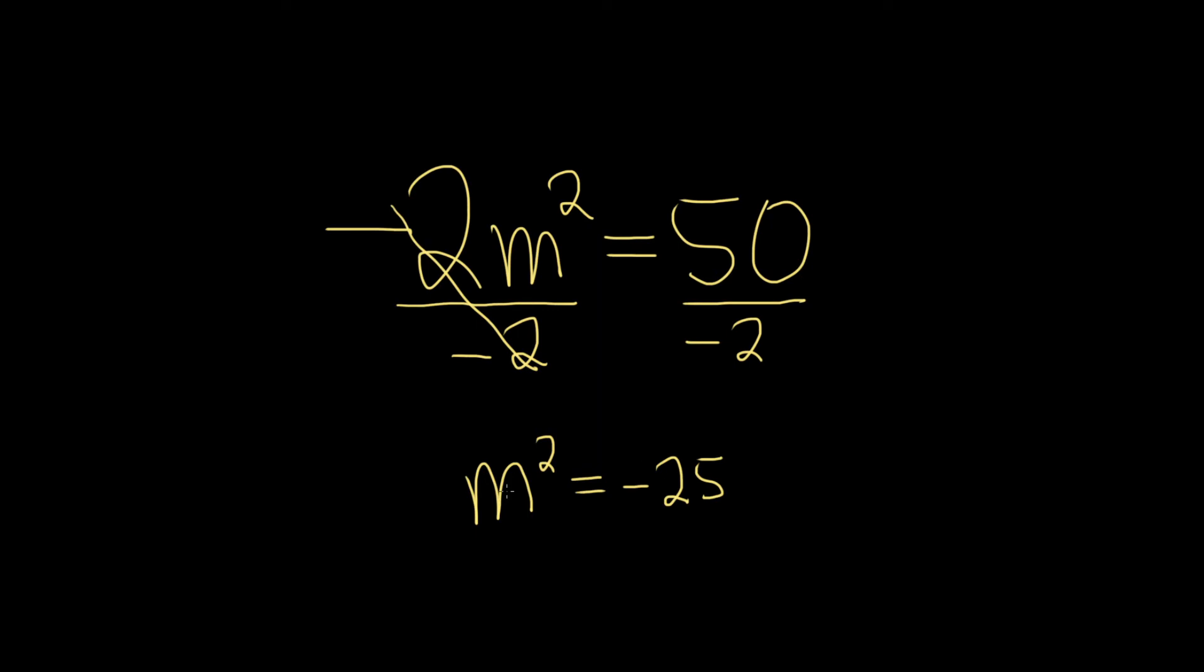Now we're in a position where we can use the square root property. The square root property just says if you have one side of an equation squared equal to a number, what you can do is just take the square root of both sides.